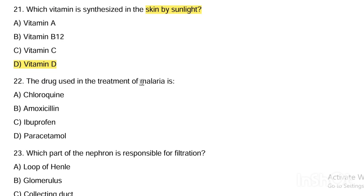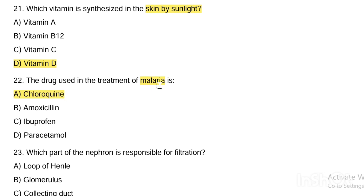Next question. The drug used in the treatment of malaria is: Option A, chloroquine. Option B, amoxicillin. Option C, ibuprofen. Option D, paracetamol. Answer is Option A — chloroquine is used in the treatment of malaria.